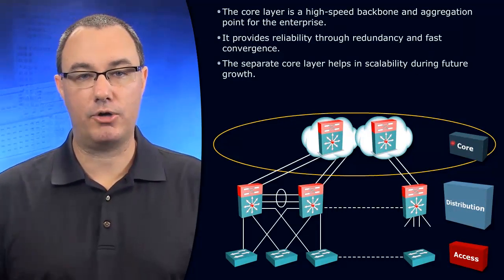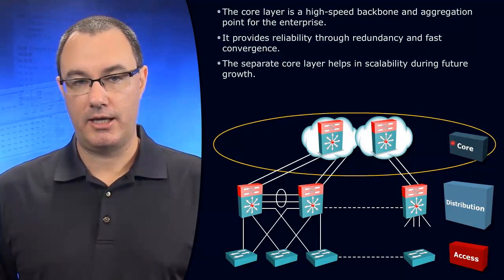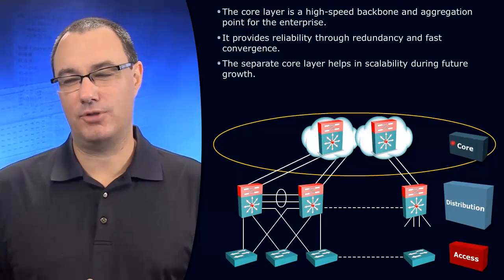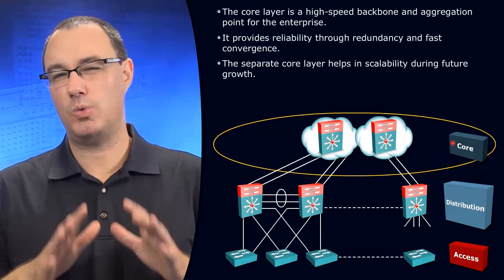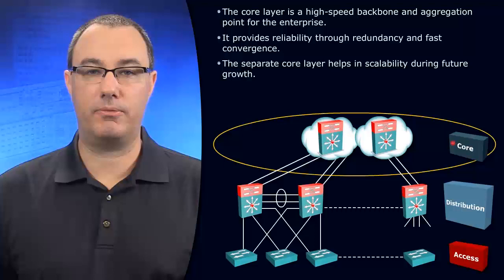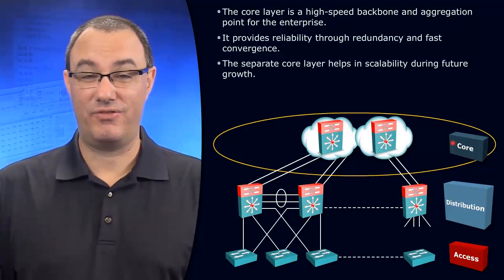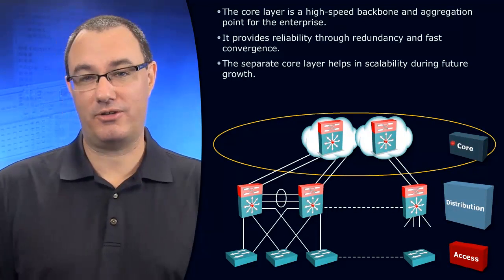It used to be that our core was constructed of layer two switches, and we're talking back in the late 90s and early 2000s. That layer two core was okay back then. Our convergence mechanism was spanning tree, and we're talking classic spanning tree. 50 seconds convergence time, 30 seconds if you do a few extra things.